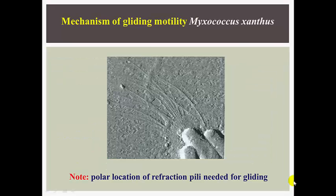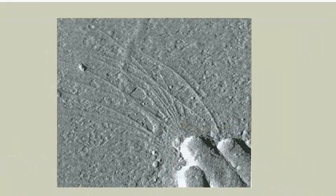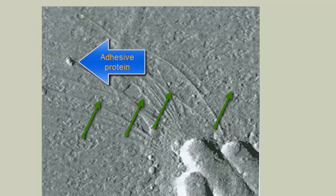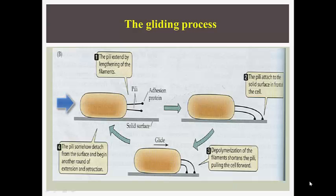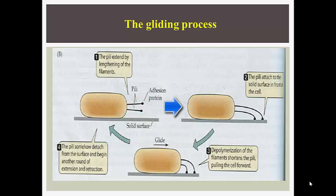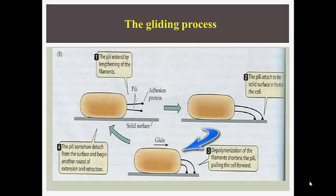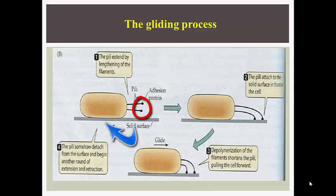This figure shows an atomic force micrograph of Myxococcus xanthus. Gliding motility in Myxococcus xanthus involves type IV pili and adhesion proteins — note the polar location of retraction pili needed for gliding. The gliding process involves extension and lengthening of the type IV pili, which secretes adhesive proteins to attach to a solid surface in front of the cell. Depolarization of the cell's filaments shortens the pili and pulls the cell forward. The pili then detaches from the solid surface and begins another round of extension and retraction.